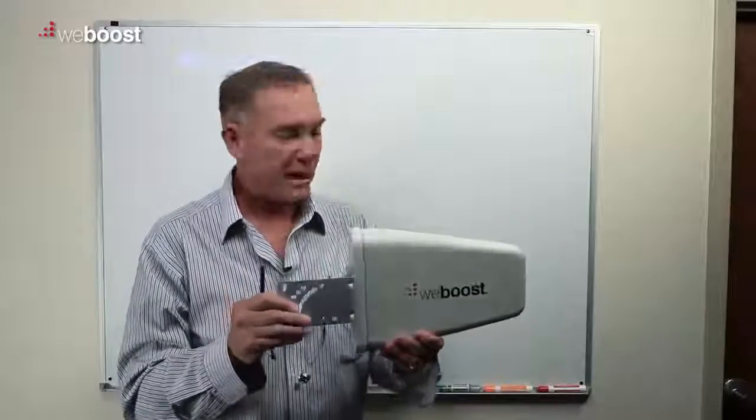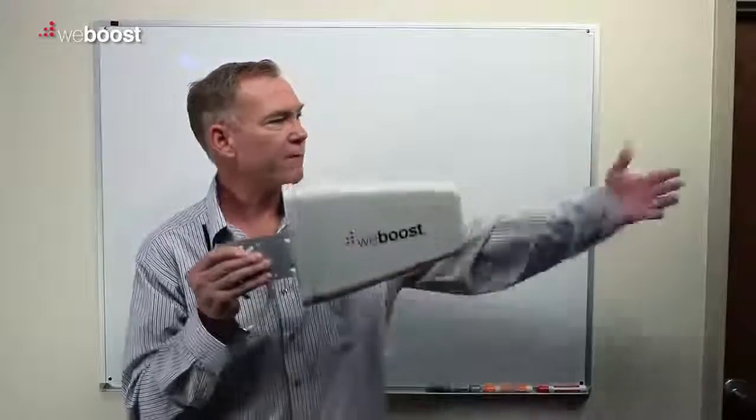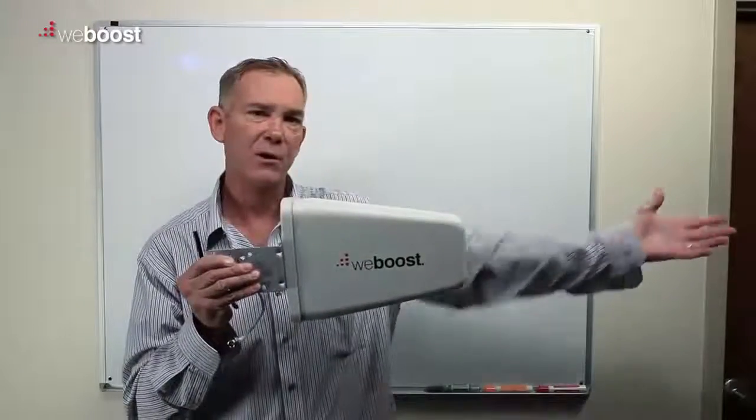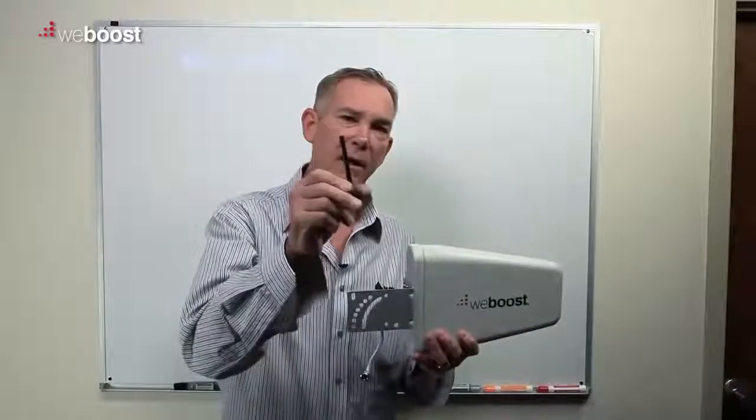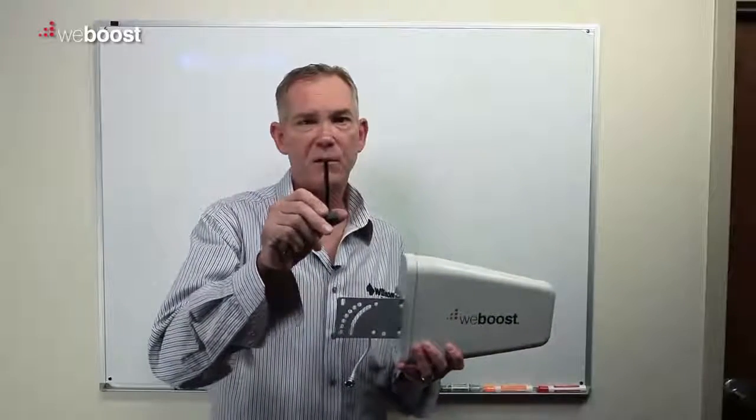So this is a directional antenna. It primarily receives energy from this direction and transmits energy in this direction. Whereas an omnidirectional antenna receives and transmits energy 360 degrees.